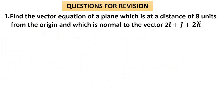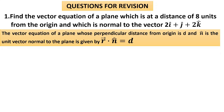Question 1: Find the vector equation of a plane which is at a distance of 8 units from the origin and which is normal to the vector 2i plus j plus 2k. Whenever the distance from the origin is given, we use the normal form: r dot n-hat equals d. Here d equals 8 is already given.